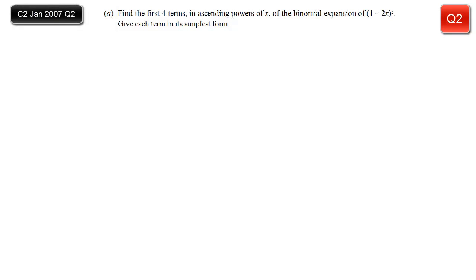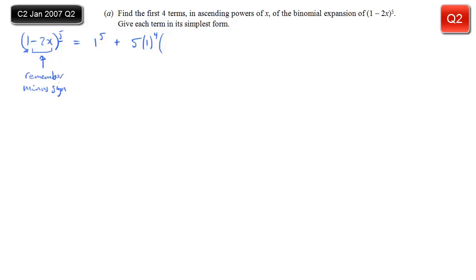Binomial question: find the first four terms in ascending powers of x of the expansion of (1 − 2x) to the power 5, giving each term in its simplest form. The first term is 1 to the power 5. For the second term, the coefficient is always n, so in this case 5, then the first part to a decreased power — going from 5 to 4 — and then the second bit of the bracket, which is minus 2x. That comes in to the power 1.